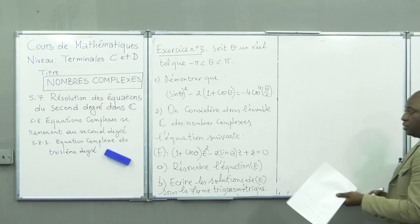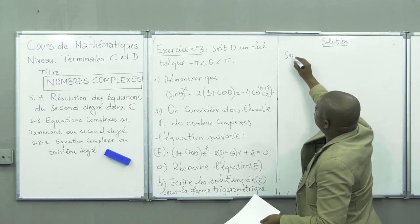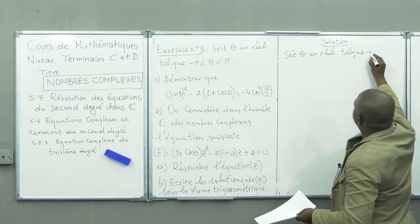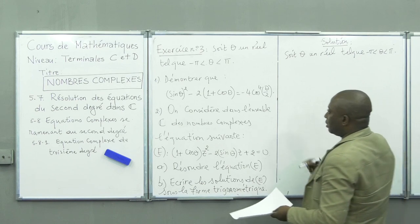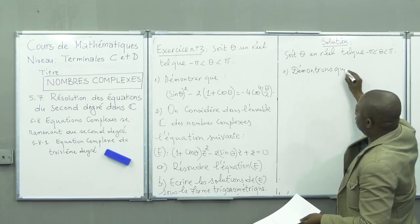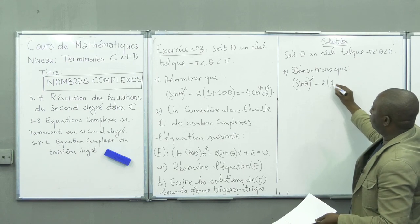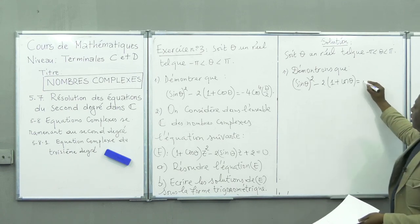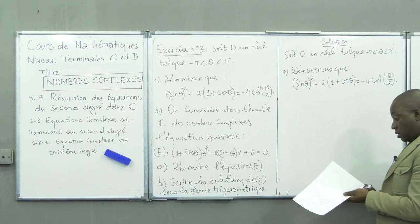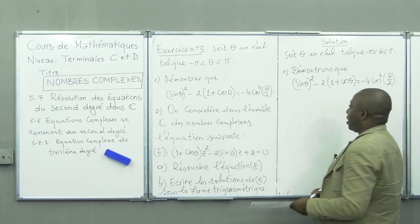Solution. Soit θ un réel tel que -π < θ < π. Petit a : démontrons que sin²θ - 2(1 + cosθ) = -4cos⁴(θ/2). Nous allons faire cette démonstration sous la base des formules de transformation trigonométrique. Rappel : quel que soit T appartenant à ℝ, on a les deux relations suivantes.